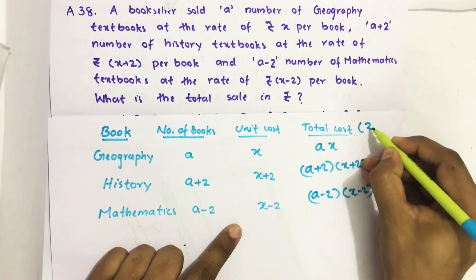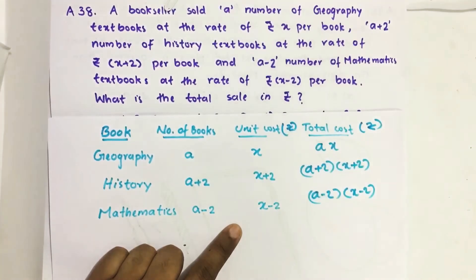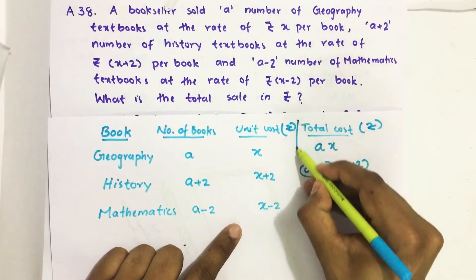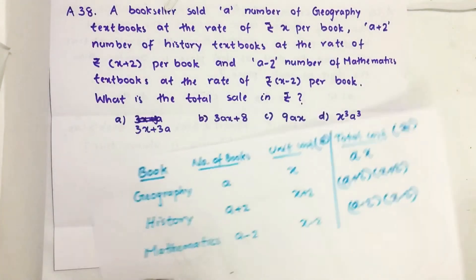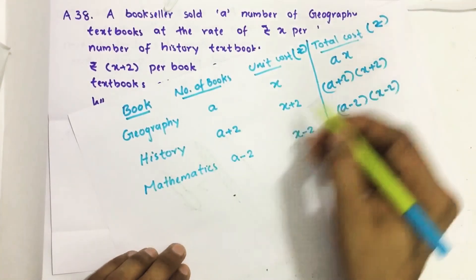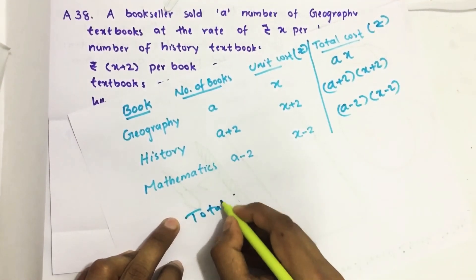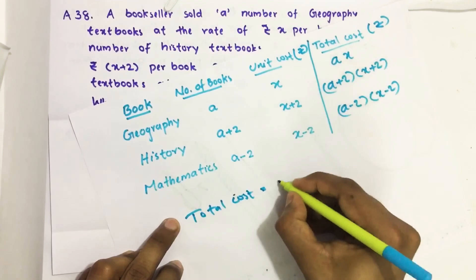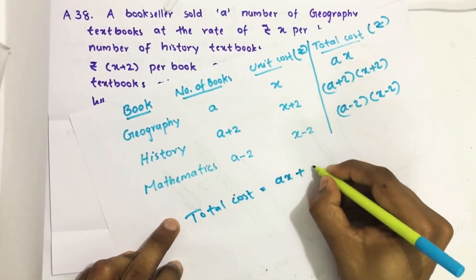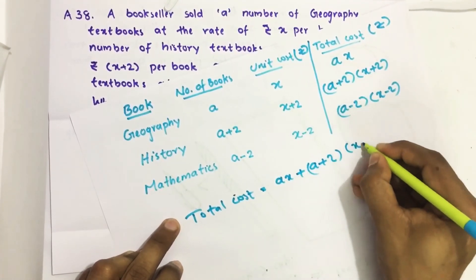All these are in rupees and unit cost is in rupees. So by just adding all these we get the total cost. Total cost equals ax plus a plus two into x plus two plus a minus two into x minus two.